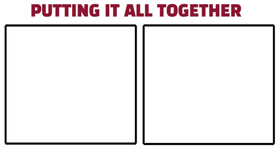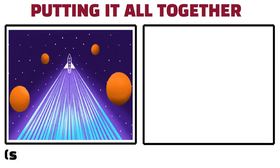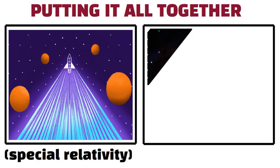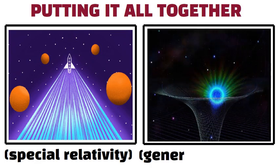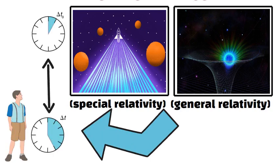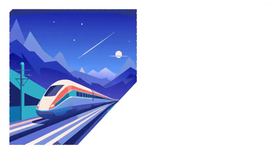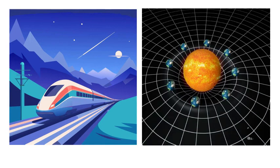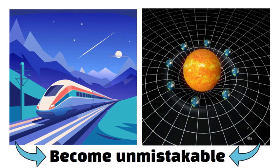Putting it all together, time dilation stems from two main ideas. Moving close to light speed, special relativity, and dwelling in a stronger gravitational field, general relativity. Each factor can slow your clock relative to someone else's. In extreme cases, high-speed journeys or strong gravity wells, these effects become unmistakable. They also combine in complex ways.